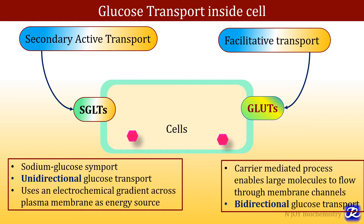This is a sodium glucose symport and it is responsible for unidirectional glucose transport. In this process, energy is required. This process uses an electrochemical gradient across the plasma membrane as an energy source. So glucose transport inside the cell occurs by two mechanisms: facilitative transport with the help of GLUTs, and secondary active transport with the help of sodium glucose linked transporters.